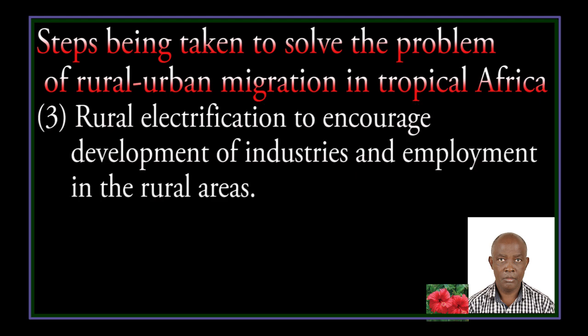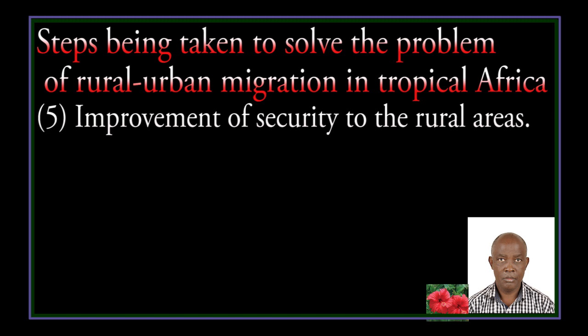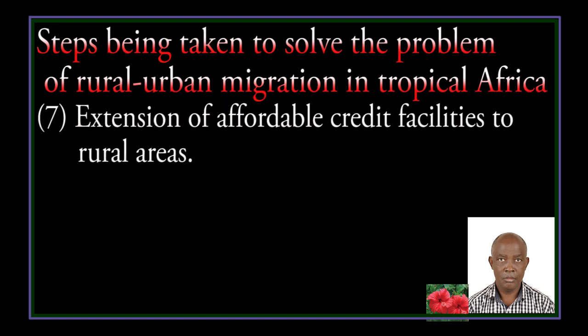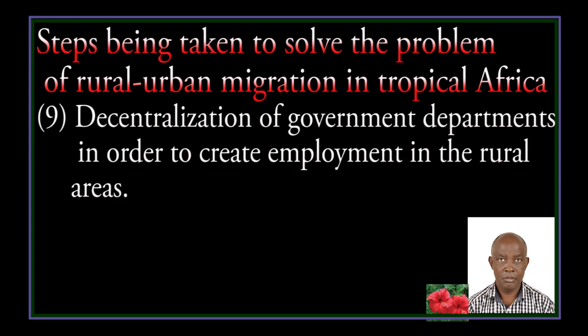Rural electrification to encourage the development of industries and employment in rural areas. Improvement of water supply in rural areas. Improvement of security in rural areas. Political stability. Extension of affordable quality facilities to rural areas. Population control. Decentralization of government departments in order to create employment in rural areas.